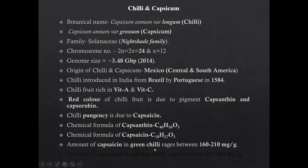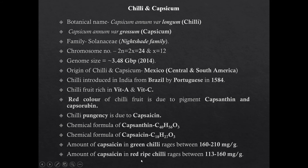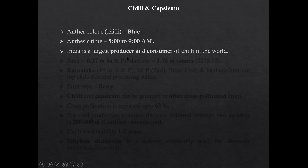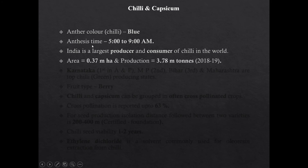The amount of capsaicin in green chilies ranges between 160 to 10 mg per gram. In case of red ripe chili, capsaicin is 113 to 160 mg per gram. The anther color of chili is blue. Anthesis time in chili is 5 to 9 AM. India is the largest producer and consumer of chili in the world. Area of chili cultivation in India is 0.37 million hectares and production is 3.78 million tons.